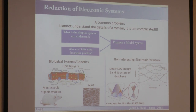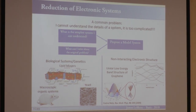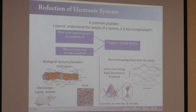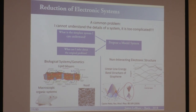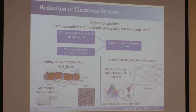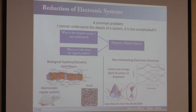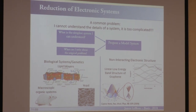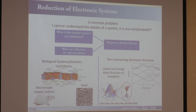It's a common problem in essentially all of science that you would say to yourself: I cannot understand the details of a problem, it's just too complicated. So you ask, what is the simplest system you actually can understand? You propose some sort of model system. And then once you've solved that model system, you have to ask the question: what from that solution can you actually infer about the original problem that you intended to solve?